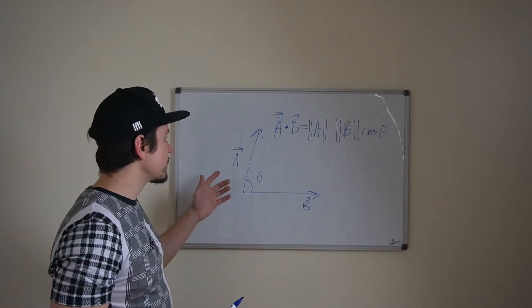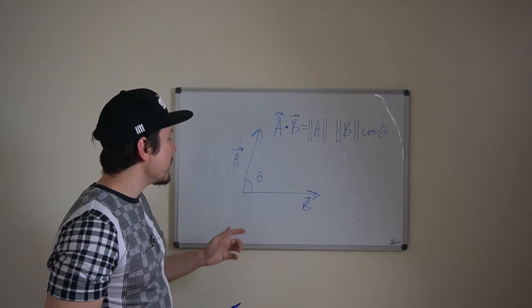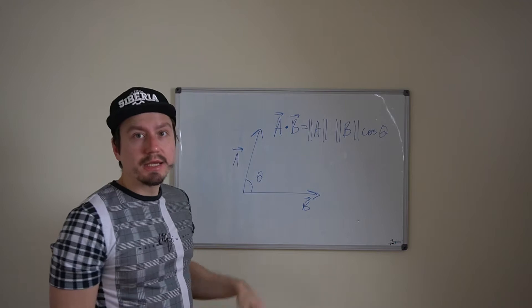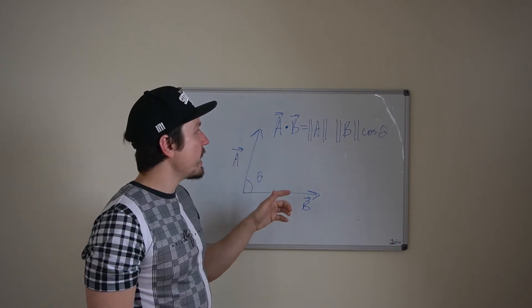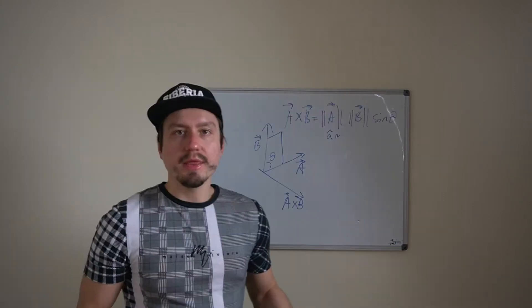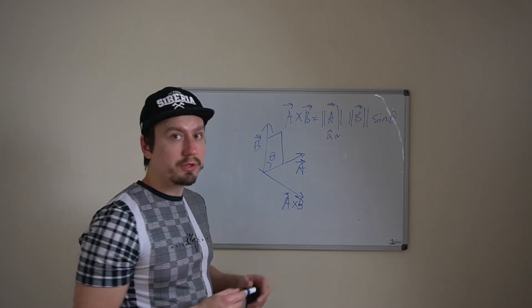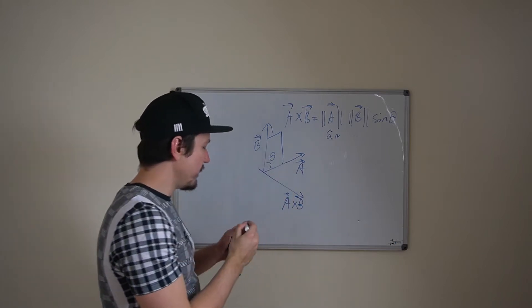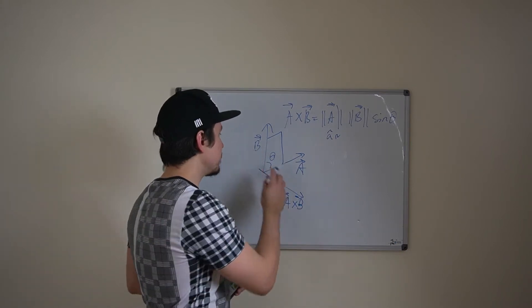The dot product is simply a measure of how much vector A lies in the direction of vector B. It's calculated as the magnitude of vector A multiplied by the magnitude of vector B multiplied by cosine theta. The cross product, unlike the dot product, is about the area and the vectors that are perpendicular to both B and A. It's very easy to show the concept of cross product using the right hand — if you have a vector pointing one way and another vector pointing to the left, the cross product is going to be a vector pointing up.